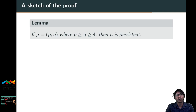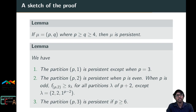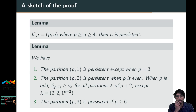A key lemma states: when μ has two parts both greater than or equal to 4, then μ is persistent. Another lemma states that the partition (p, 1) is persistent except when p = 3. The partition (p, 2) is persistent when p is even; when p is odd, F_{p,2} ≥ s_λ for all partitions λ of p+2 except λ = (2², 1^{p-2}) and λ = (1^p), which corresponds to the exceptional case in our main result.